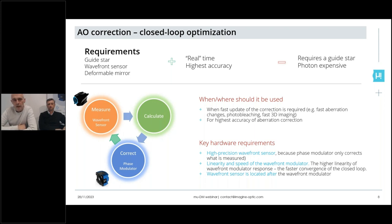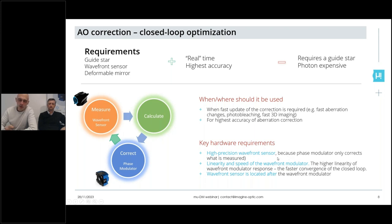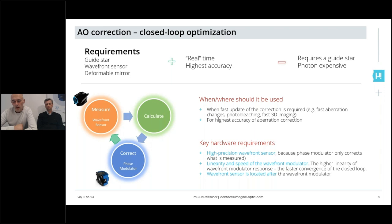The closed-loop approach is recognized as highly accurate — more accurate than the indirect wavefront sensing approach. For its implementation, a high-precision wavefront sensor is required, because the wavefront sensing accuracy is what drives the efficacy of the method. The phase modulator is only correcting what is measured by the wavefront sensor. High linearity and speed of the wavefront modulator are required in order to optimize the speed of convergence of the closed loop.